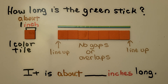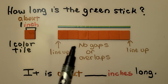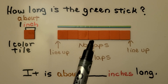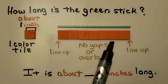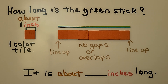Then we count the number of color tiles: one, two, three, four, five, six, seven. Because each color tile is about an inch, this means the stick is about seven inches long.